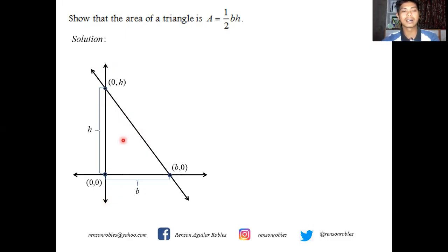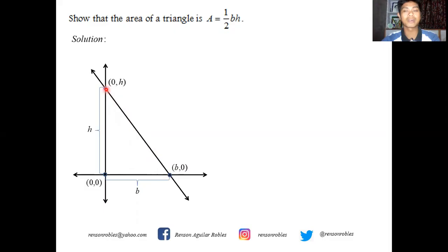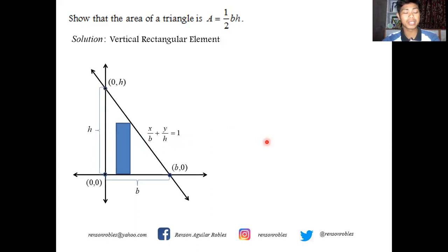The next thing to do is to name this line. There are many ways to name it: the point-slope form, two-point form, slope-intercept form, and the intercept form. Since we have two points (b,0) and (0,h), where (b,0) is the x-intercept and (0,h) is the y-intercept, the most convenient method is the intercept form. So we have x/b + y/h = 1. We now choose our element — a vertical element touching the line x/b + y/h = 1 above and the x-axis (y=0) below.